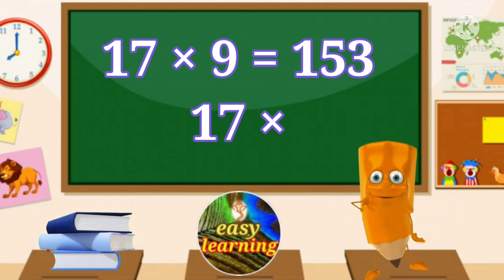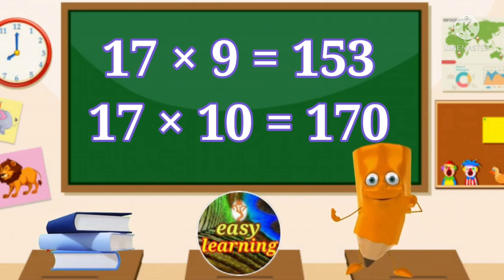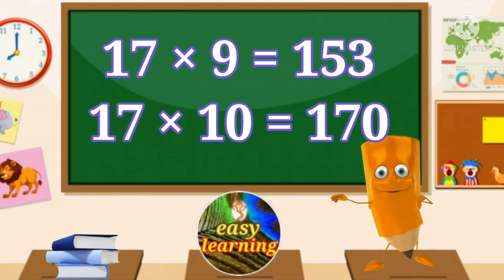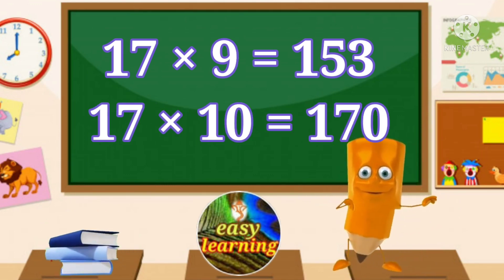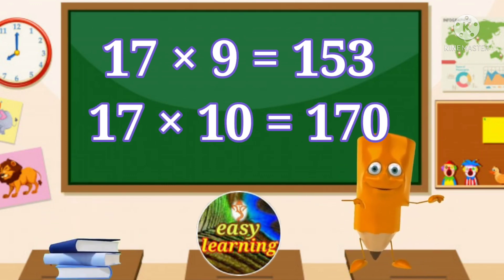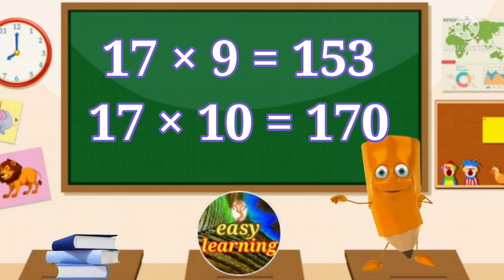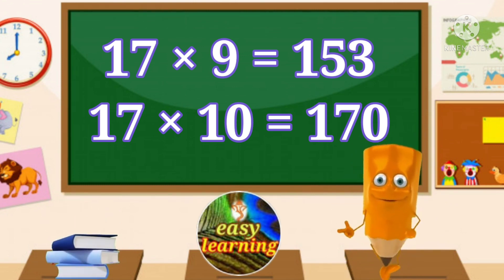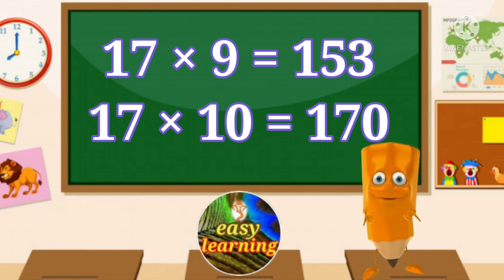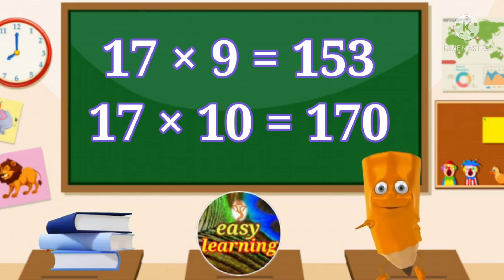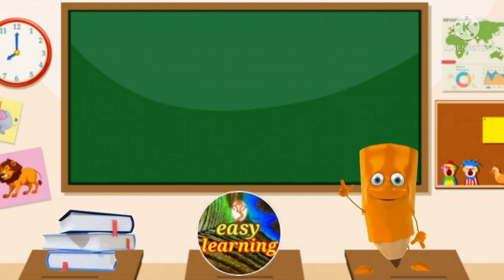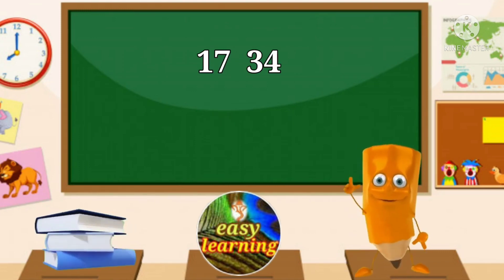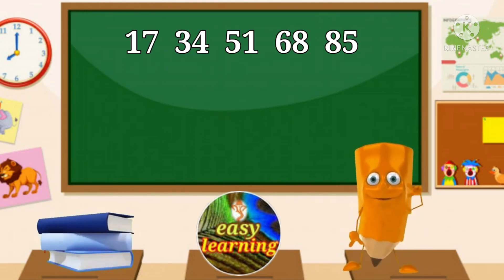17 nines are 153. 17 tens are 170. Let's learn one more time.